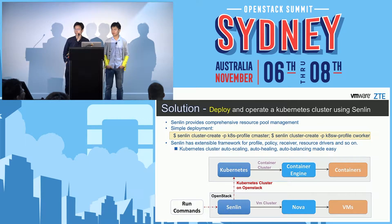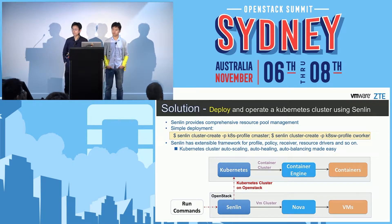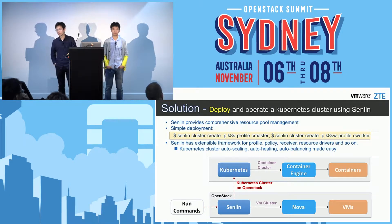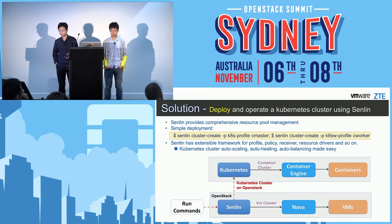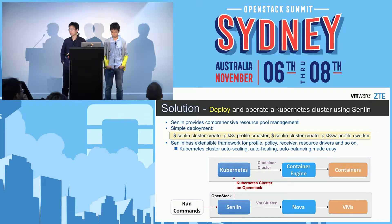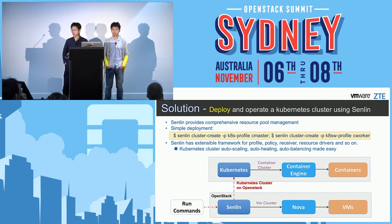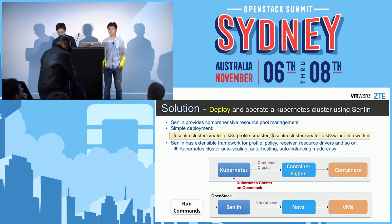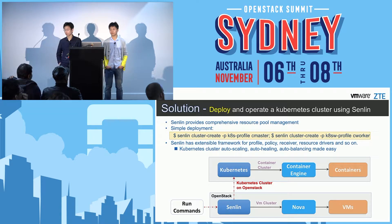In this session, we will give a solution about deploying and operating a Kubernetes cluster using the Senlin Project. We can see two commands here: the first command will bring up a Kubernetes master cluster, and the second will give you a Kubernetes worker cluster. After using these two commands to deploy the Kubernetes cluster, Senlin can use its extensible framework to apply policies and use its receivers to handle load balancing, auto-healing, and auto-scaling.